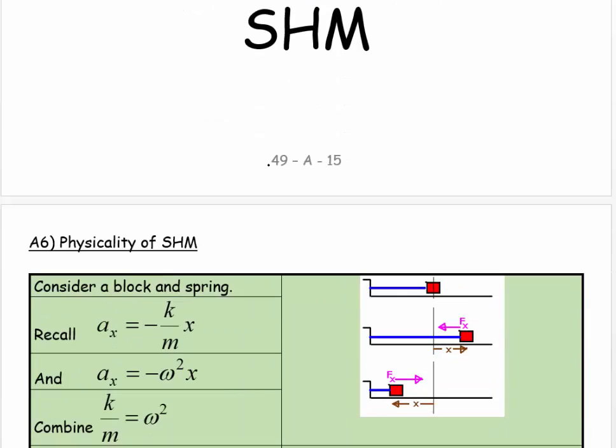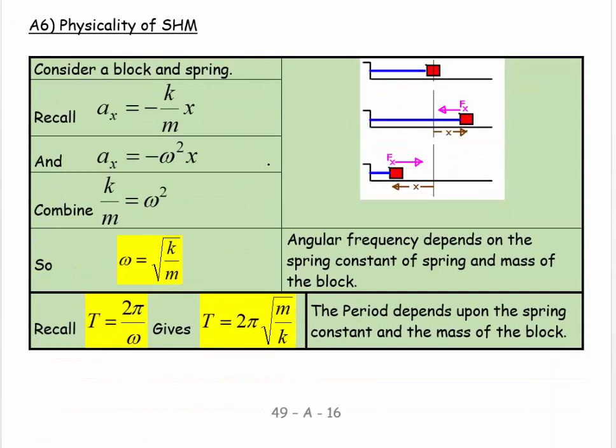So we're going to look at the physicality of the situation. Here we have our visualization with the mass on a spring in its equilibrium position. We imagine moving it to the right and then letting it go, and it oscillates backwards and forwards.